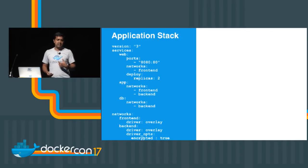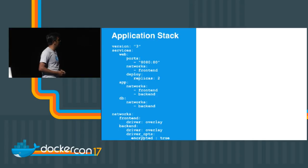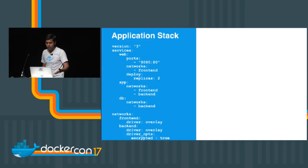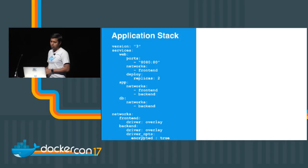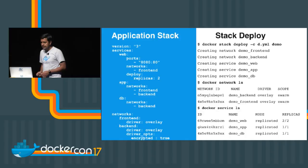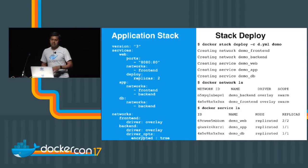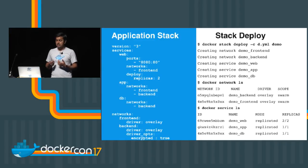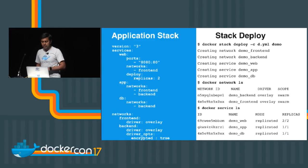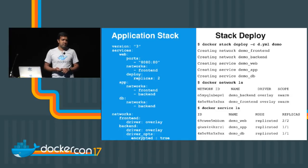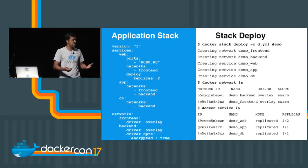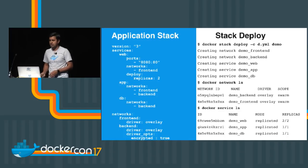We have an app service connected to two networks, front-end and back-end, and DB connected only to the back-end. This provides microsegmentation where the DB service can be accessed only on the back-end network and the web service only on the front-end, giving us isolation. You can also define the network tag and specify what driver you want. The encrypted option makes the data plane encrypted — we provide IPsec out of the box. When you do a stack deploy, you can see networks and services being created, visible via docker network ls and service ls.